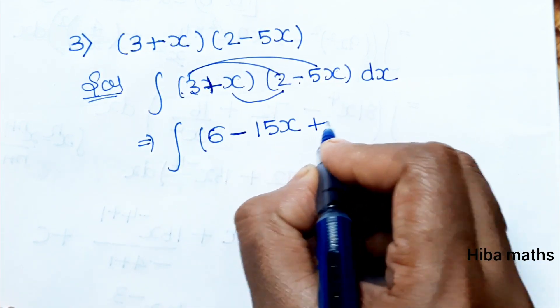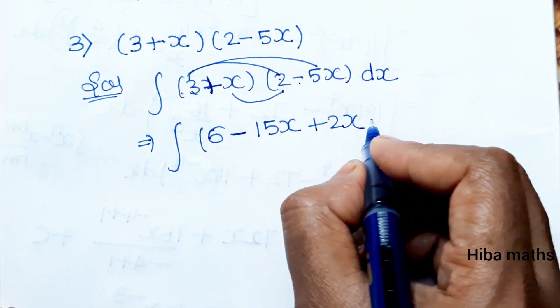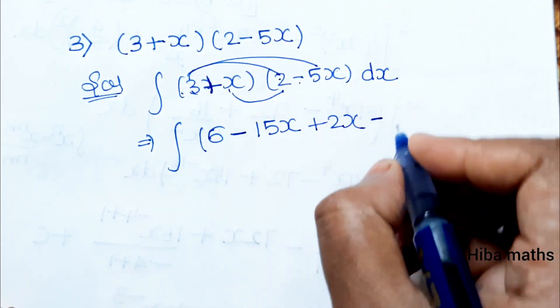x into 2 is 2x, plus into minus is minus. x into 5x gives 5x². Now we will combine like terms.